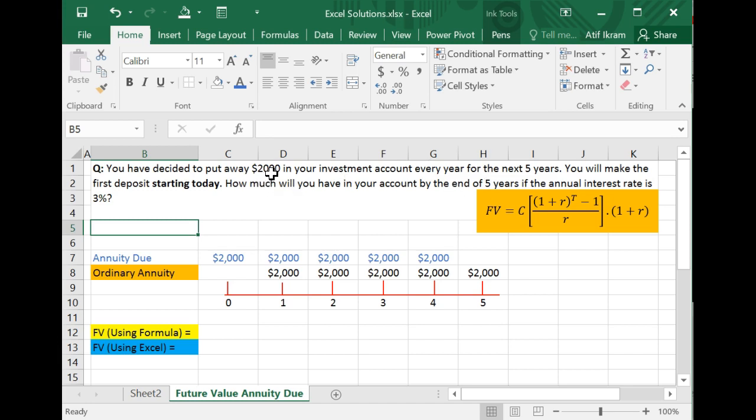Let's suppose you've decided to put away $2,000 in your investment account every year for the next five years. So this is an example of an annuity. Why? Because you're going to be putting away a constant amount, $2,000, at regular intervals, which is every year, for a fixed number of years, which is five years. Constant cash flow invested regularly for a fixed number of years. Yep, that's an annuity.